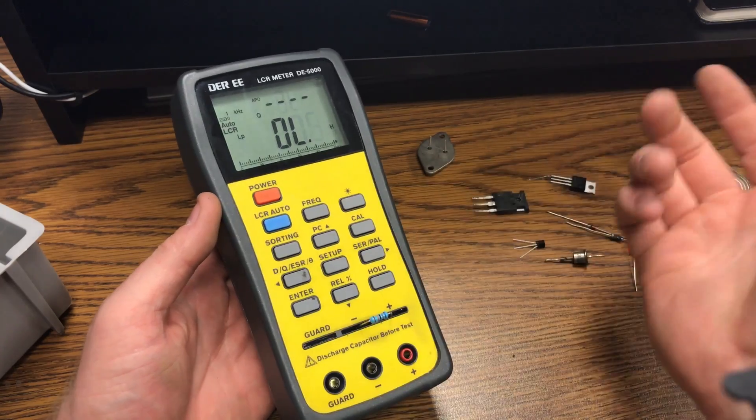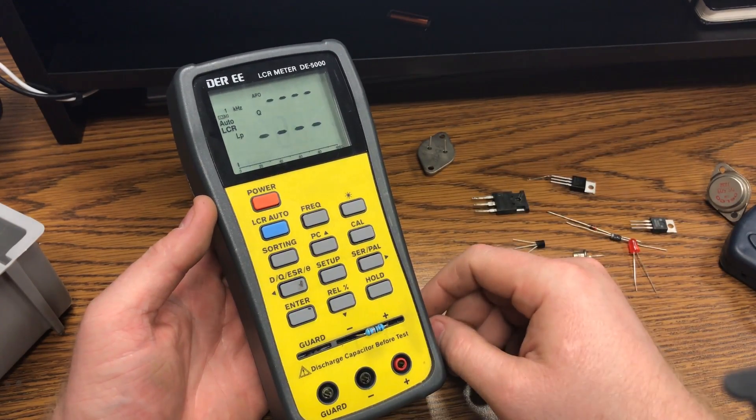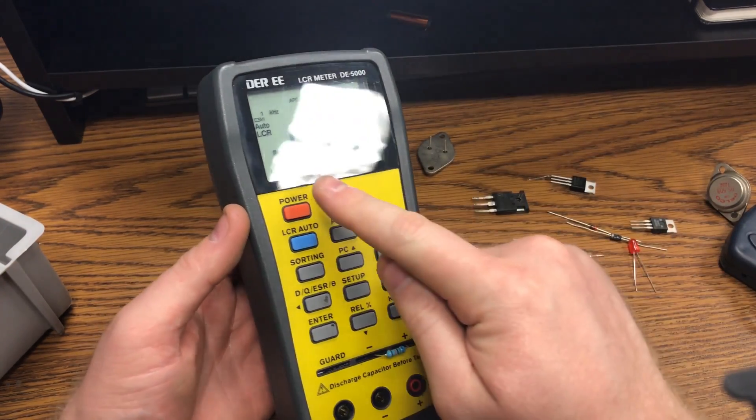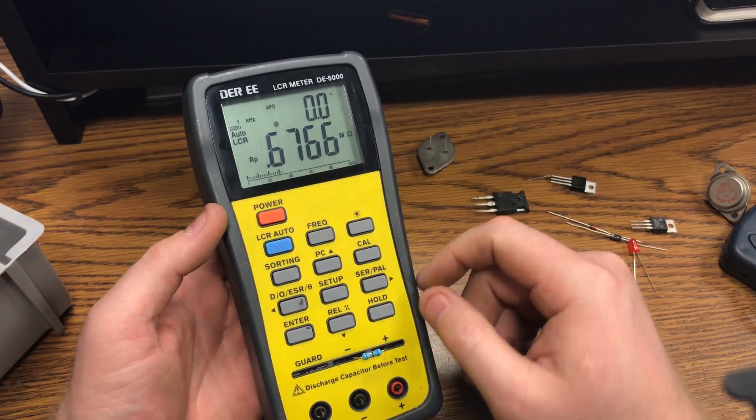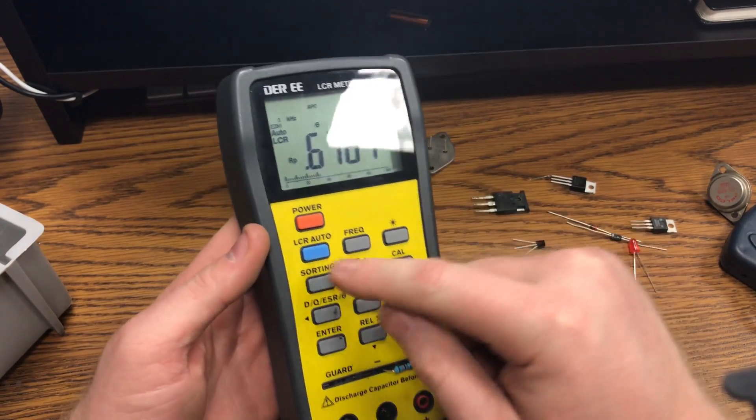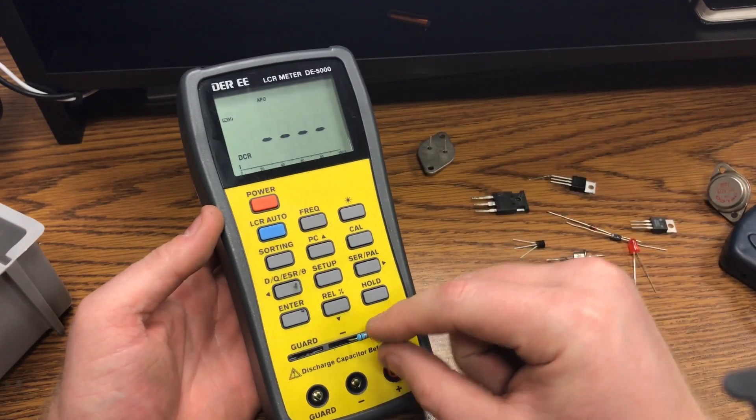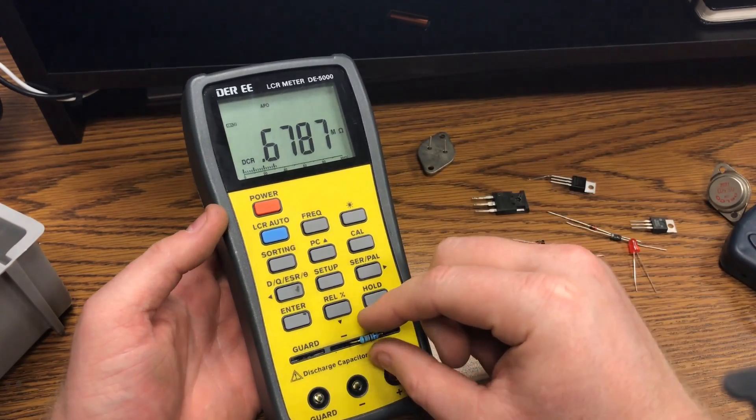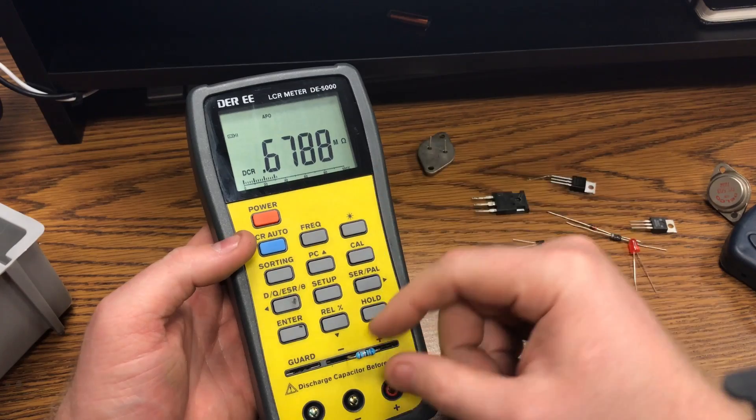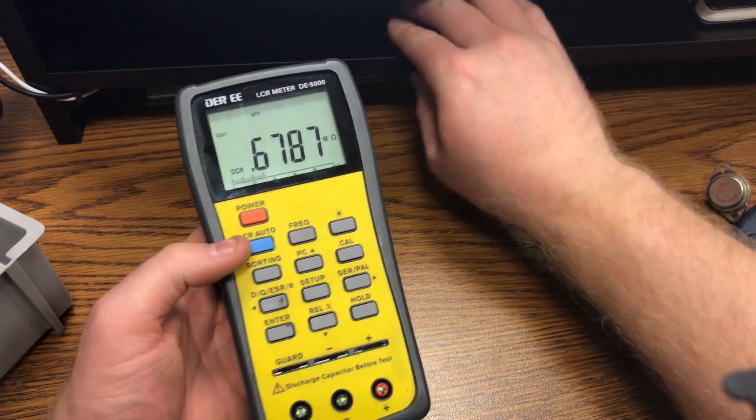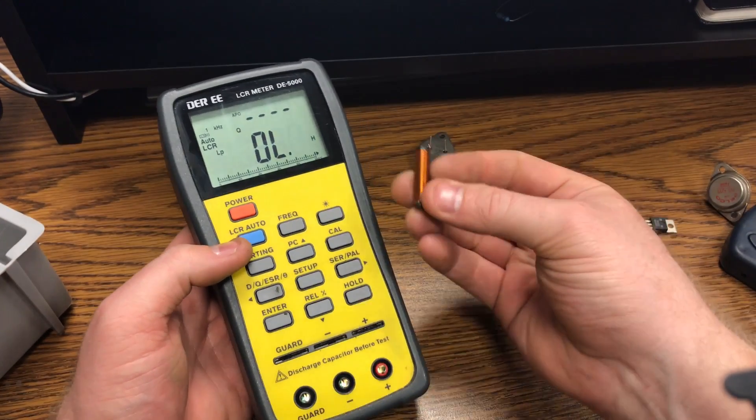You take a resistor, just plug it in, automatically it'll tell you what the resistance is. To make it quicker, if you know you're just going to test a bunch of resistors, you can just go to the DC resistance and, you know, plug in one after another so it doesn't have to determine what kind of part it is. But auto works pretty well.